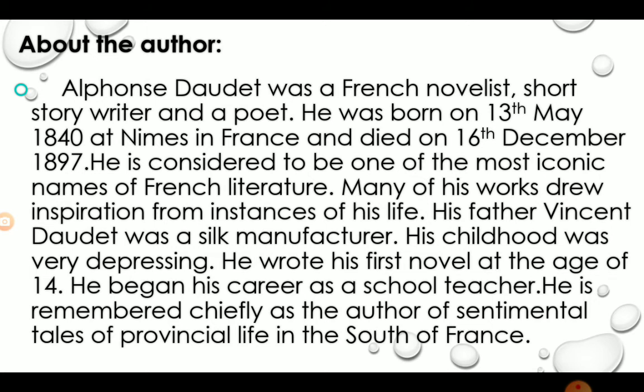About the author: Alphonse Daudet was a French novelist, short story writer, and poet. He was born on 13th May 1840 at Nimes in France and died on 16th December 1897. He is considered one of the most iconic names of French literature, and many of his works drew inspiration from instances of his own life. His father, Vincent Daudet, was a silk manufacturer. His childhood was very depressing. He wrote his first novel at the age of 14 and began his career as a school teacher but left his job afterwards. He is remembered chiefly as the author of sentimental tales of provincial life in the south of France.